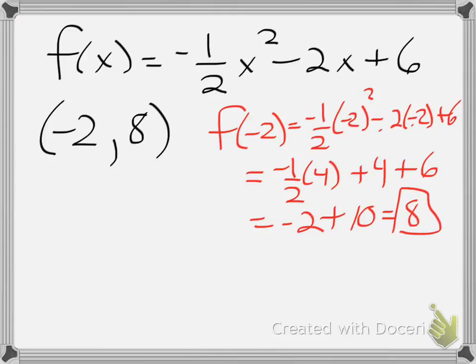So I know it's a maximum value. Negative 2, 8 is the actual vertex. And specifically, I can say that the max is the y value, because that is the highest value on the graph, positive 8.